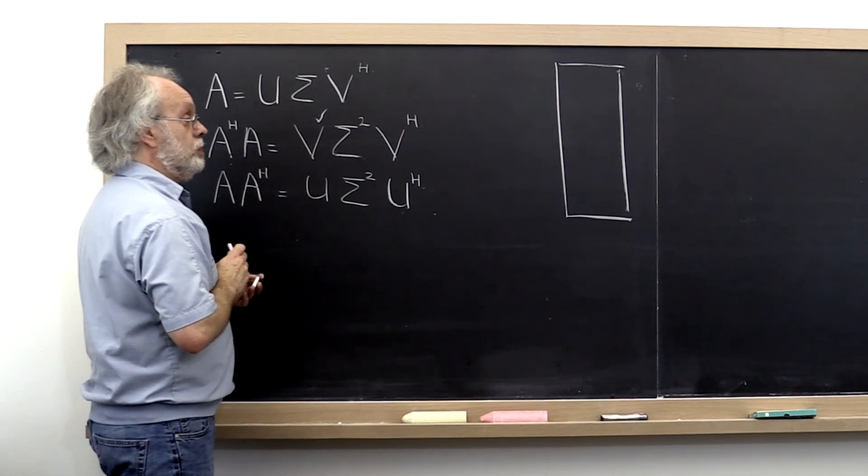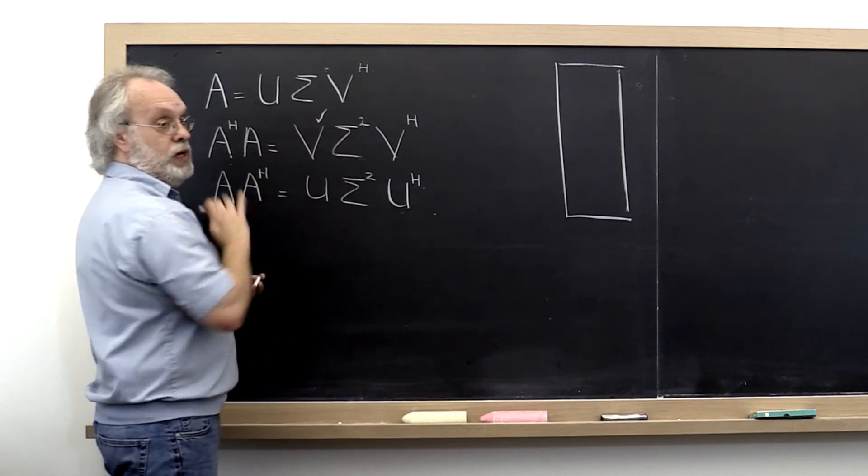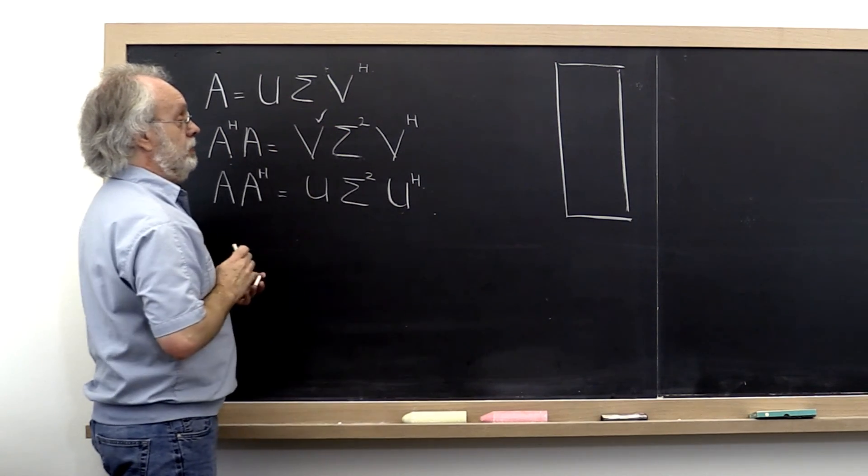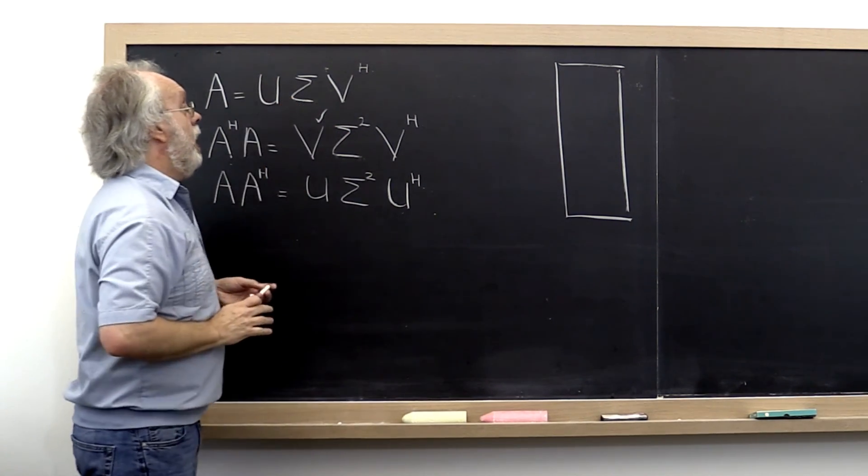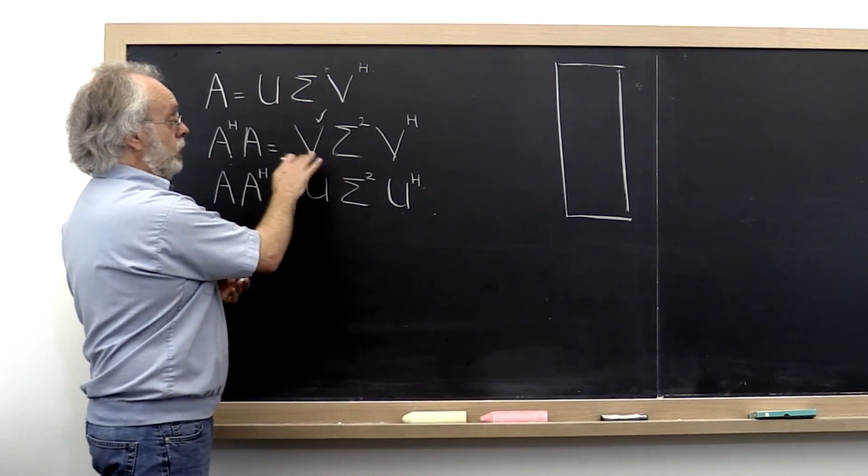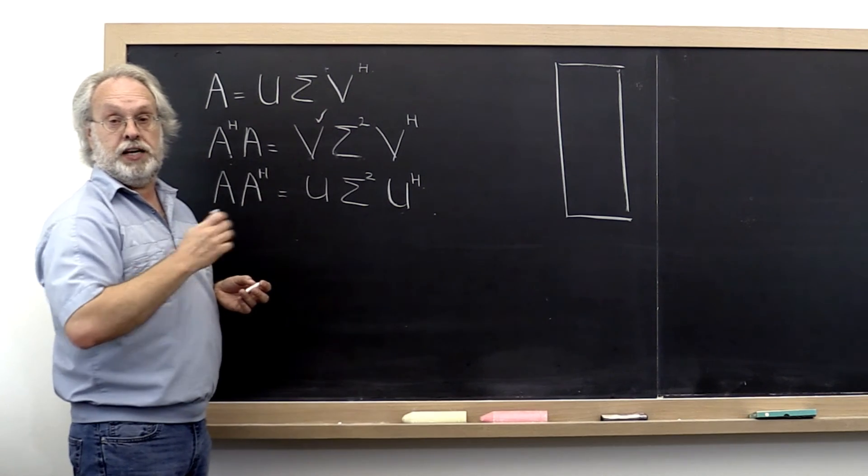Once we have that, we can take the square root of the diagonal elements to give us matrix Sigma. In the process this also reorders the columns of matrix V.